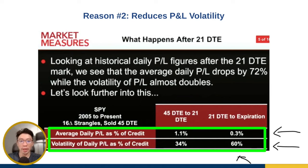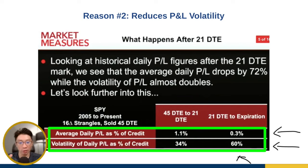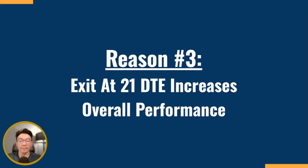If you see a huge swing in your P&L, most of the time it's because you are holding it all the way closer to expiration during the last few days of the trade — that's when you see a very huge swing in your P&L. And finally, reason number three: exiting at 21 DTE increases overall performance.